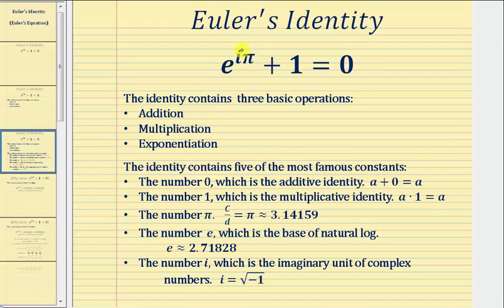The equation also contains the number pi, where we can obtain pi by taking the circumference of any circle and dividing by the diameter. So pi is a constant, but it's also an irrational number, which is approximately 3.14159.